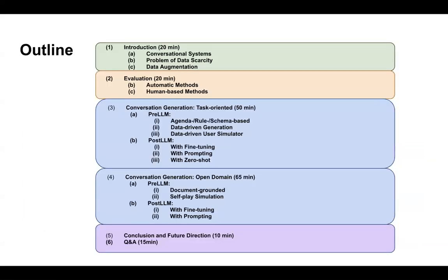This is roughly the timeline we want to propose. We start with an introduction on conversational systems, the data scarcity problem, and formalize what data augmentation is. Then we present evaluation — evaluation for dialogue systems has not yet been clearly structured across tasks, and we are trying to bring existing knowledge together to make a comprehensive manual for this. Then we go into the two approaches: task-oriented and open domain, which will together make roughly two hours. Finally, we go to conclusions and future directions and leave some time for an open Q&A session with the participants.